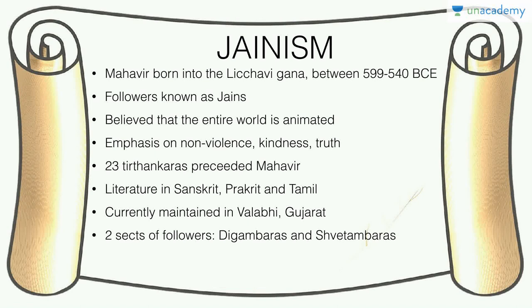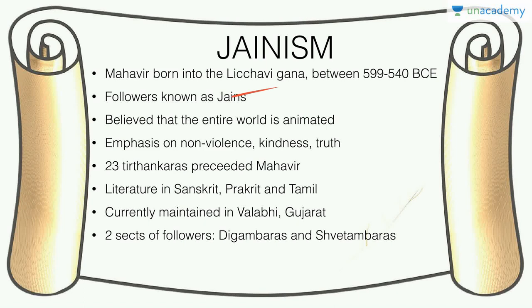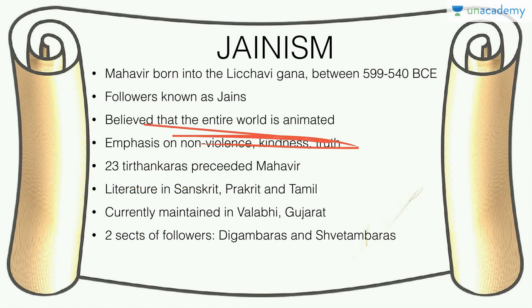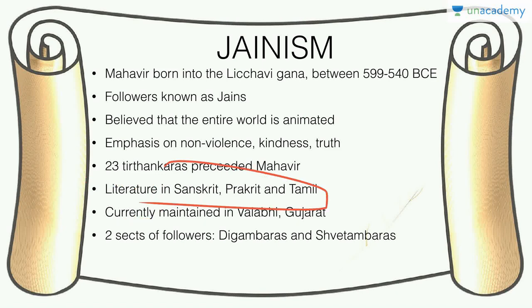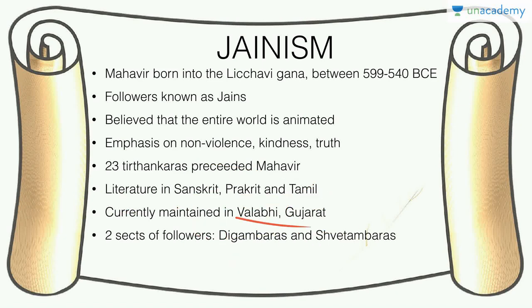Jainism was initiated by Mahavir, a prince of the Lichchhavi clan — one of the Mahajanapadas — in the 6th century BCE. His followers are known as Jains. He said there were 23 Tirthankaras (teachers) before him. He believed the entire world is animated and therefore advocated non-violence toward everything, kindness, and truth. His literature is contained in Prakrit, Tamil, and Sanskrit, currently maintained at Valabhi in Gujarat. There were two sects: the Digambaras, who wore nothing, and the Shvetambaras, who wore white clothes.